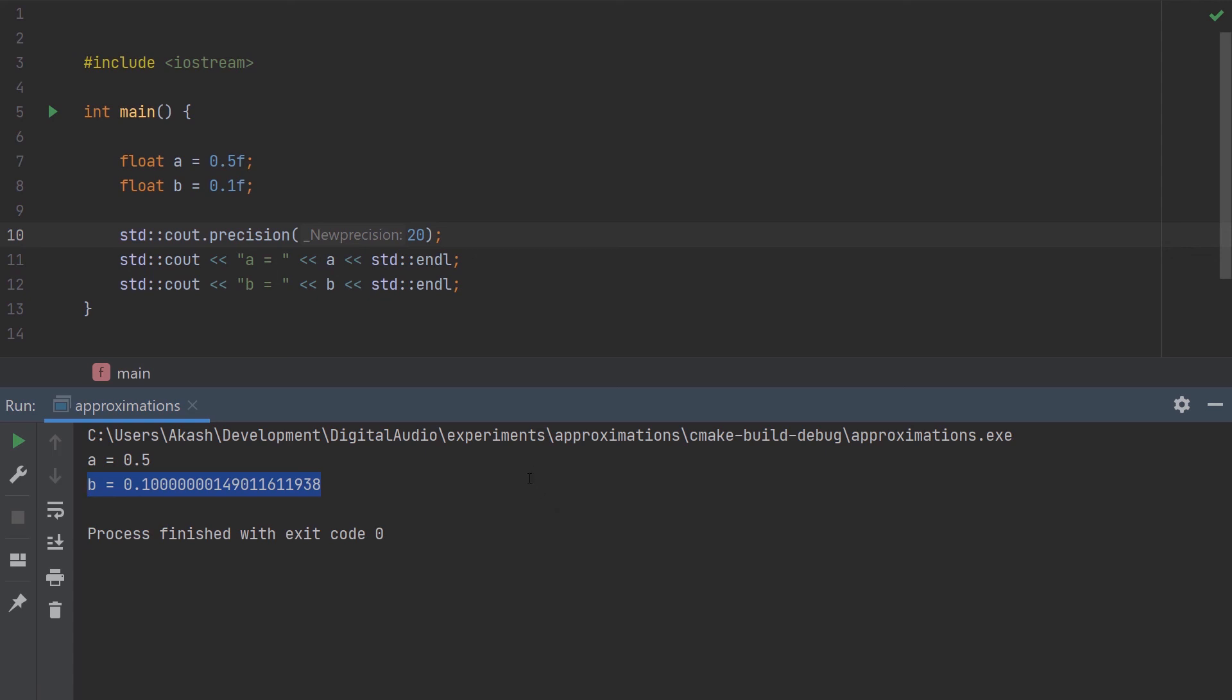This is plainly because 0.1 in decimal cannot be represented in binary in a fixed number of digits. If we try to do that, and store it in a float, we get an approximation, and only up to 24 bits of precision. More about the 24 bits and where it comes from later.